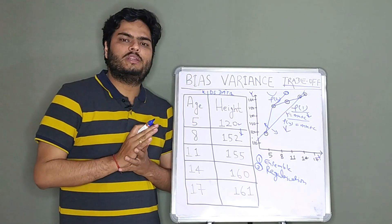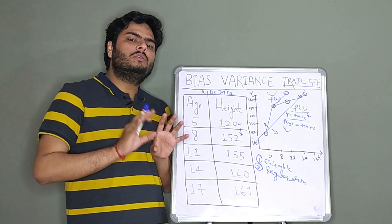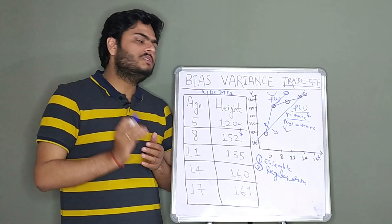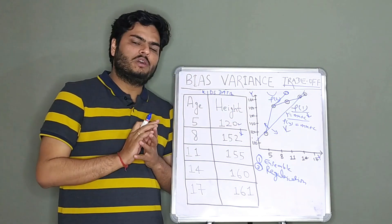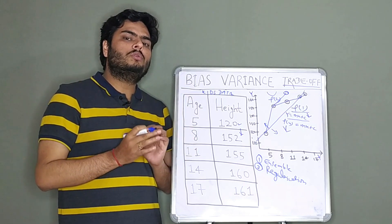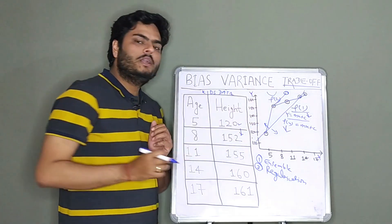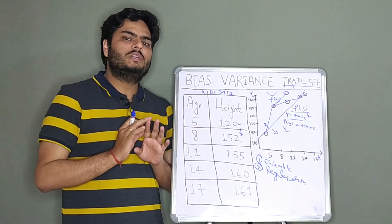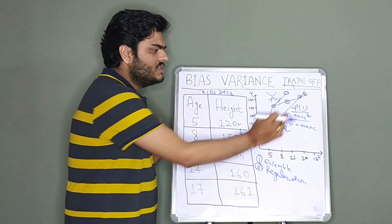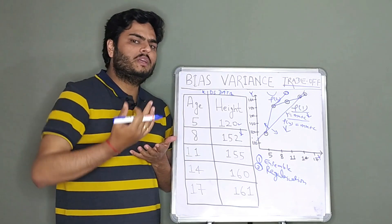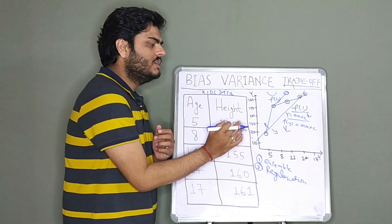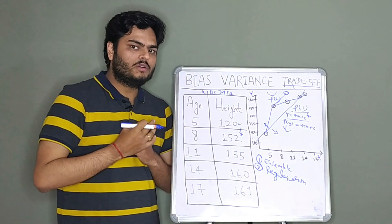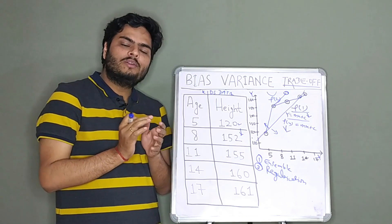A high bias model will normally underfit your data — it may not give very good accuracy on either training or test data. A high variance model might give very good accuracy on training data but poor accuracy on test data or new unseen data; this is called overfitting. Additionally, a high bias model is simpler to understand and work with, while a high variance model is more complex. High bias models are more generic and generalizable; high variance models are less generic.